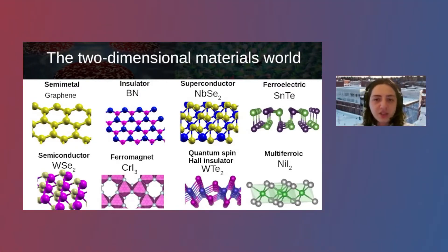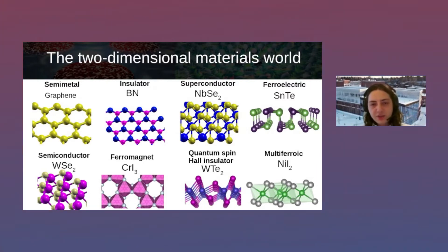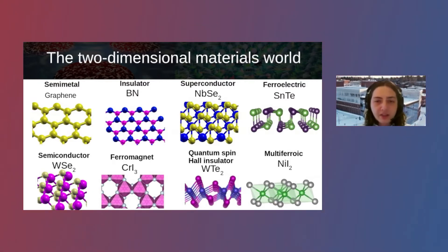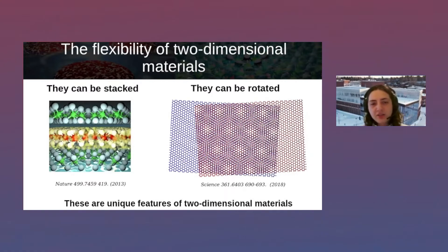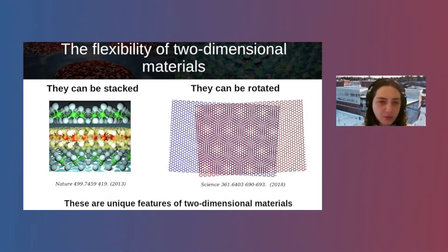The background for today's story is the van der Waals world — the world of two-dimensional materials — in which we have many different types of orders: metals such as graphene, insulators, superconductors, ferroelectrics, semiconductors, ferromagnets, quantum spin Hall insulators, multiferroics, and even quantum spin liquid candidates. The most important idea is that besides fundamental interest, we can create more exotic forms of quantum matter by properly combining these materials.